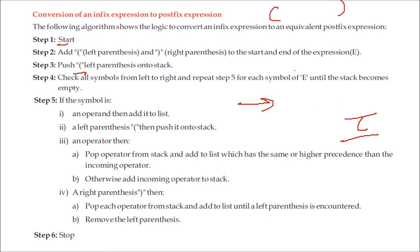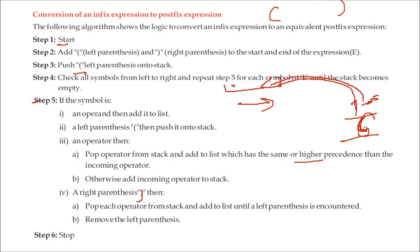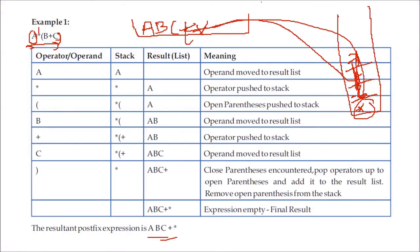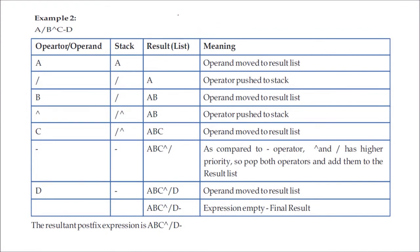Check all the symbols from left to right and repeat. If an operand is found, add it to the result list. If a left parenthesis is found, place it on the operator stack. Then if an operator has come, compare precedence — for example, minus has less precedence than the exponent operator, so you cannot place minus on top of the exponent. You must pop higher-precedence operators first, then place the incoming operator on the stack.